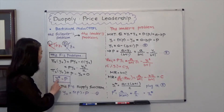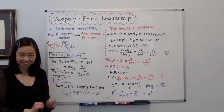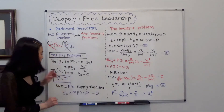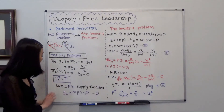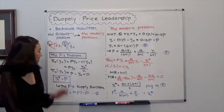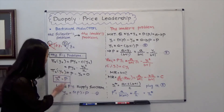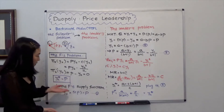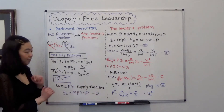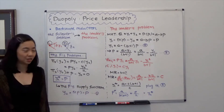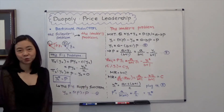That's the best response function for Firm 2 — whatever the price is, Firm 2 produces a quantity exactly equal to the price. We can write Firm 2's problem as a supply function: y2 is equal to p. We call that Equation 1.